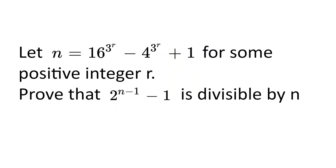Let n be 16 to the power of 3 to the power of r, take away 4 to the power of 3 to the power of r, plus 1, for some positive integer r. Prove that 2 to the power of n minus 1, minus 1, is divisible by n.